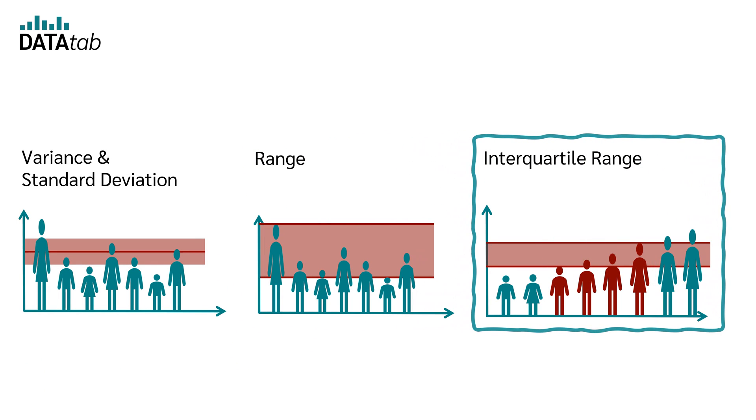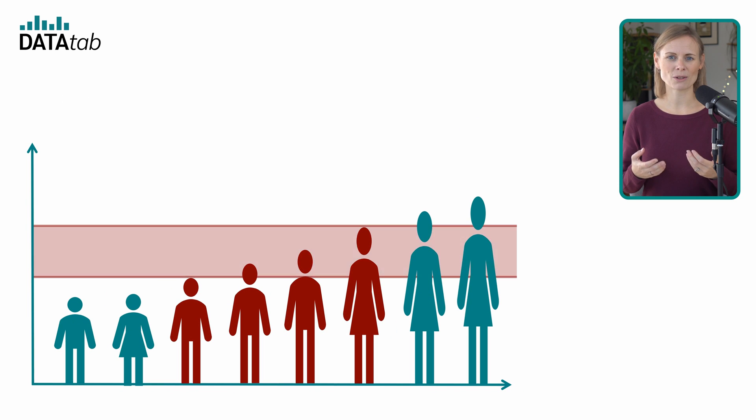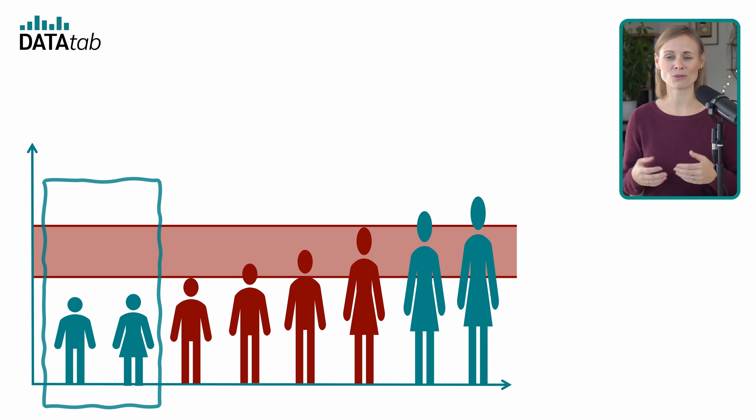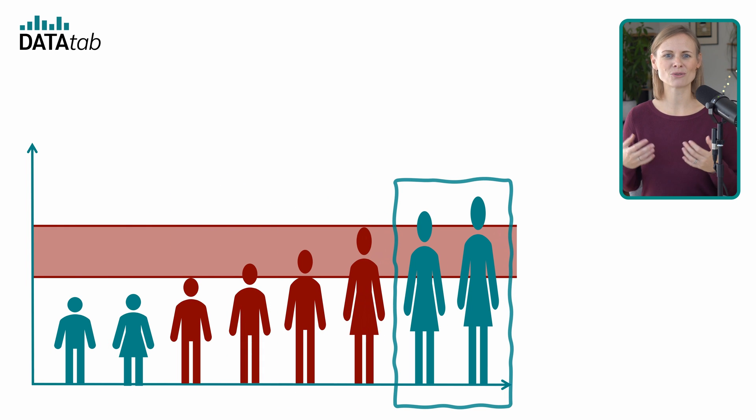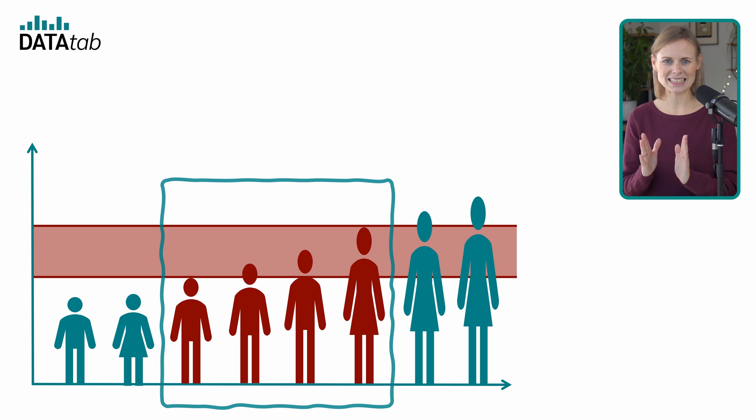Let's go to the range and the interquartile range. It is easy to understand. The range is simply the difference between the minimum and the maximum value. The interquartile range represents the middle 50% of the data. It is the difference between the third quartile Q3 and the first quartile Q1. Therefore, 25% of the values are smaller than the interquartile range and 25% of the values are larger. The interquartile range contains exactly the middle 50% of all values.